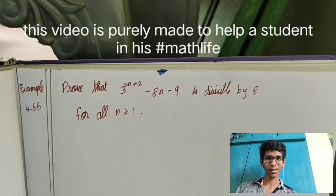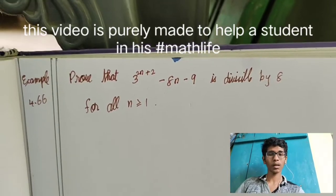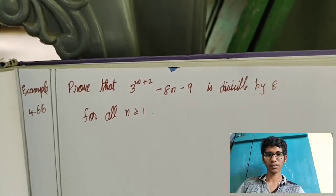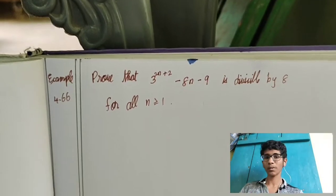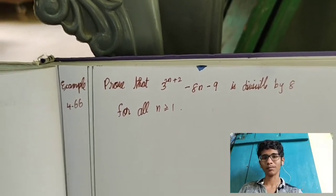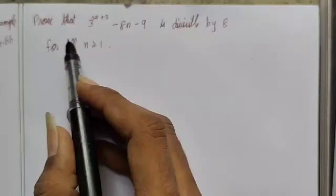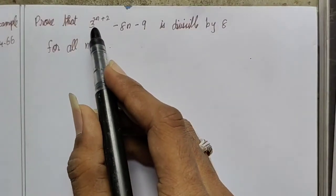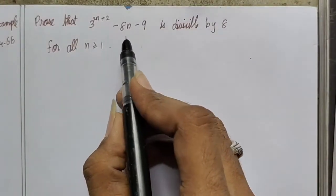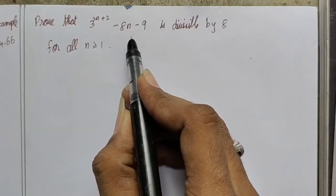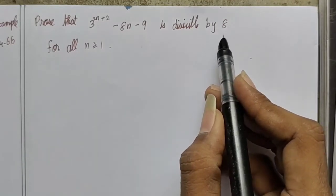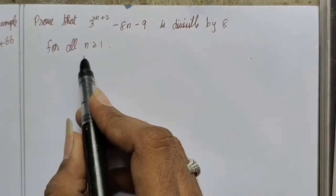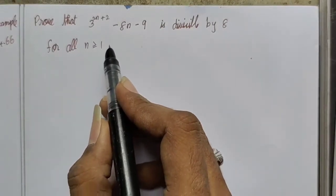Hello students, welcome back to MassMinded. After example 4.66, we will see this video. Let's see this example: Know that 3 power 2n plus 2 minus 8n minus 9 is divisible by 8, for all n greater than or equal to 1.